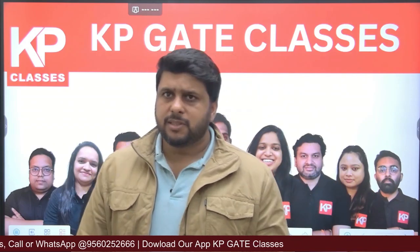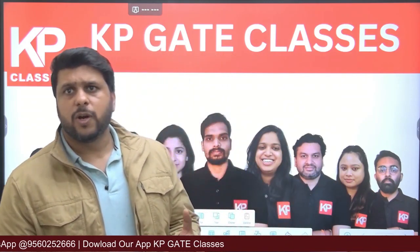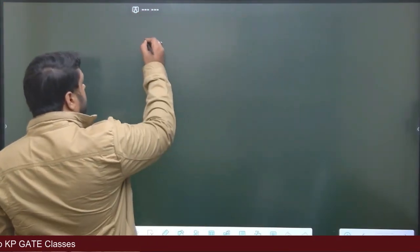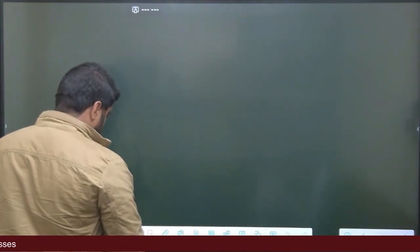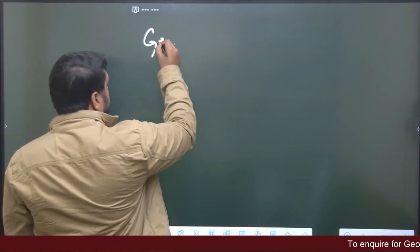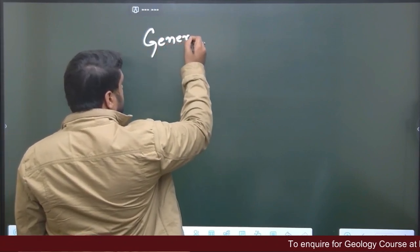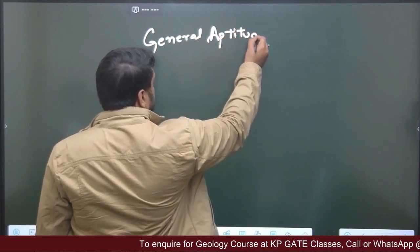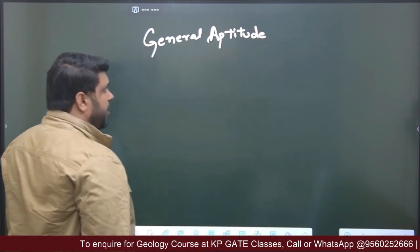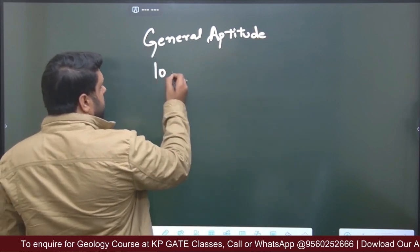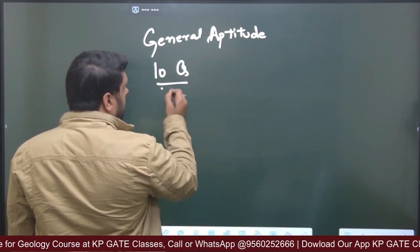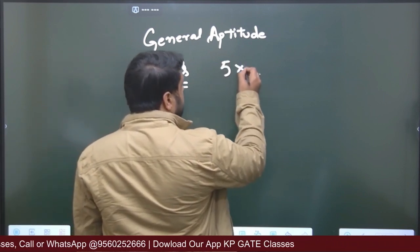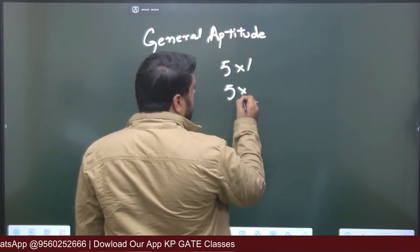Let's talk about all sections one by one. The first section was General Aptitude. In General Aptitude, there were a total of 10 questions — five questions of one mark and five questions of two marks.